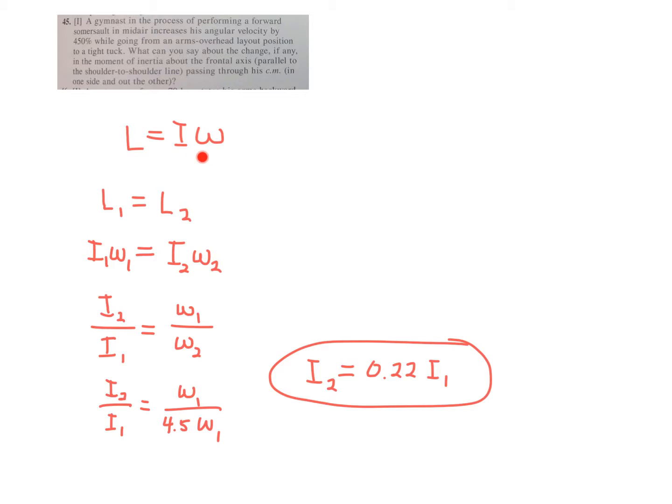It's the same thing as conservation of linear momentum when we have P equals MV. Your initial momentum must equal your final momentum. Momentum number one equals momentum number two, before and after your event.